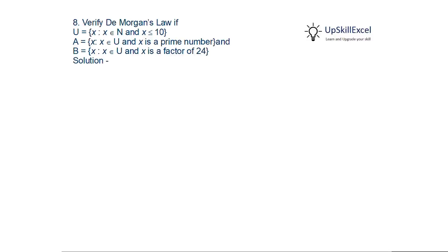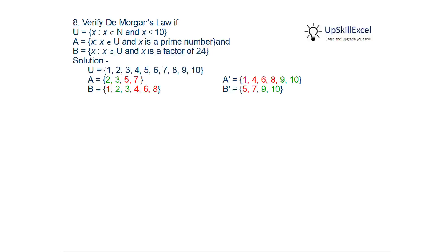Writing in roster form: U = {1 to 10}, A = {2,3,5,7} (the four prime numbers less than 10), A complement = {1,4,6,8,9,10}. B = {1,2,3,4,6,8} (factors of 24 within U), B complement = {5,7,9,10}. A union B = {1,2,3,4,5,6,7,8} — note 9 and 10 are not included. A complement union B complement = {1,4,5,6,7,8,9,10} — note 2 and 3 are not included.